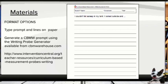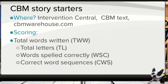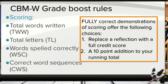You can generate CBM probes yourself from interventioncentral.org — I've got it linked for you. You can use a story starter and score total words written, total letters, words spelled correctly, and correct word sequences. If you have a fully correct demonstration of all four of those scores, you have two choices: you can replace one of your reflection grades — which are usually 30 points — with a full credit score, or you can choose to add a 10-point bonus to your running total.